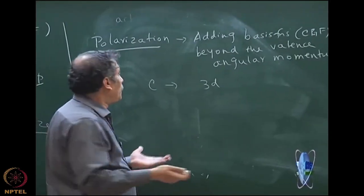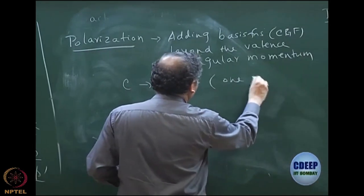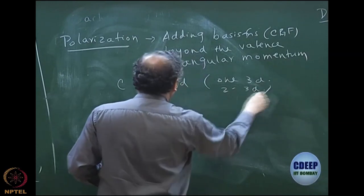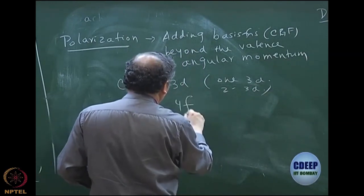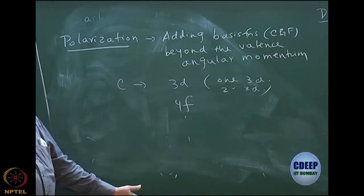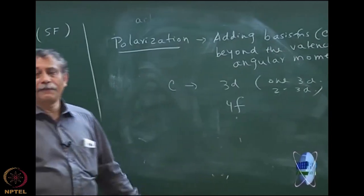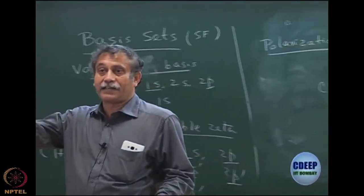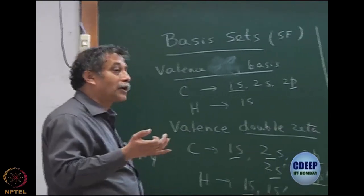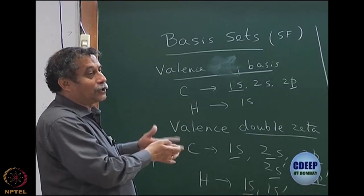People typically use one 3D function, but you can use two 3D functions. People are also using F, 4F, and so on — many functions today. So they become highly accurate basis sets. Even though carbon does not have D and F, they use these basis functions simply to expand the molecular orbitals — it has nothing to do with the actual carbon atom.